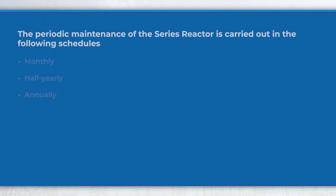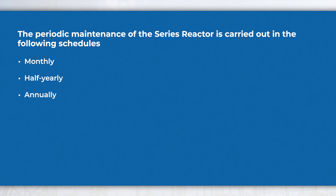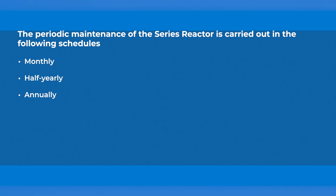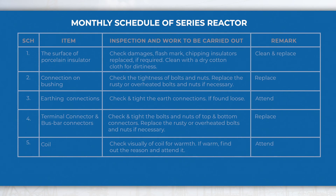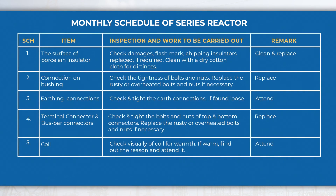The periodic maintenance of the series reactor is carried out in the following schedules: monthly, half-yearly, and annually. In the monthly schedule of the series reactor, perform activities like cleaning and checking for any damages.